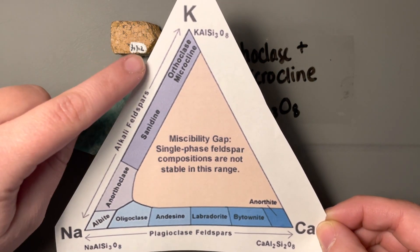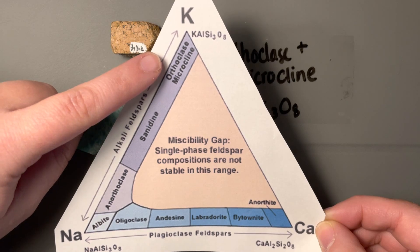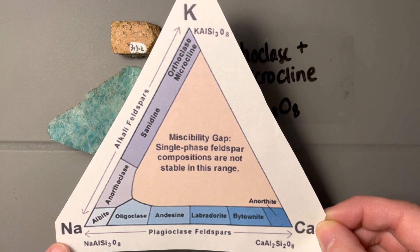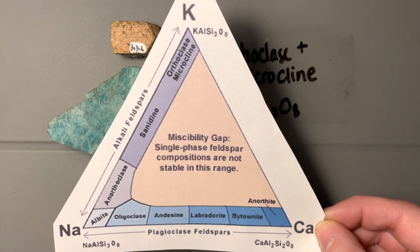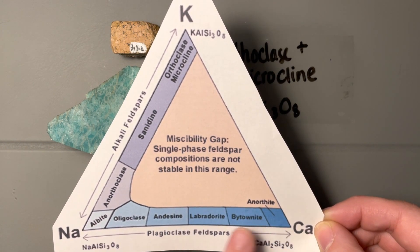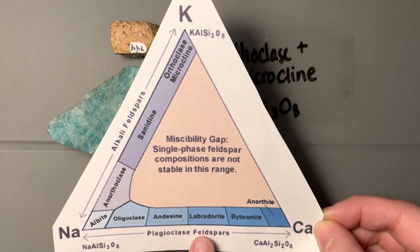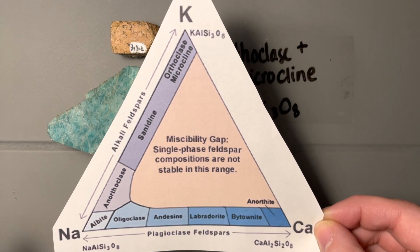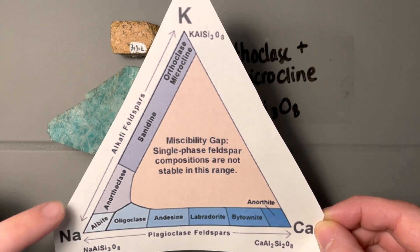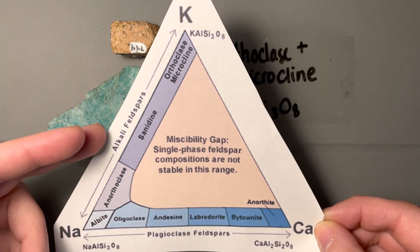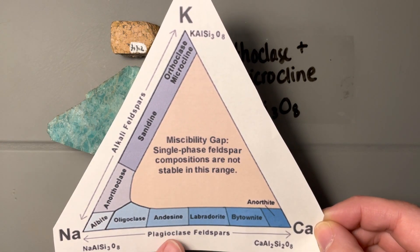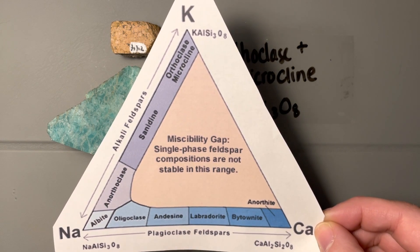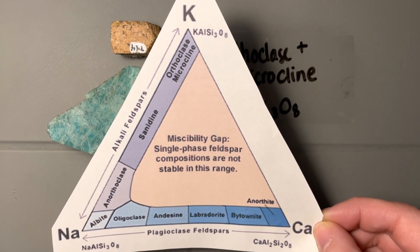We're going to focus specifically on orthoclase and microcline, which are our potassium end members, then our sodium end member albite over here, and then anorthite. In between we also have labradorite. When doing these in an exam or quiz setting, if you have anything over here you can call it an alkali feldspar, and if we have anything down here — labradorite, anorthite — you can refer to it as a plagioclase feldspar.